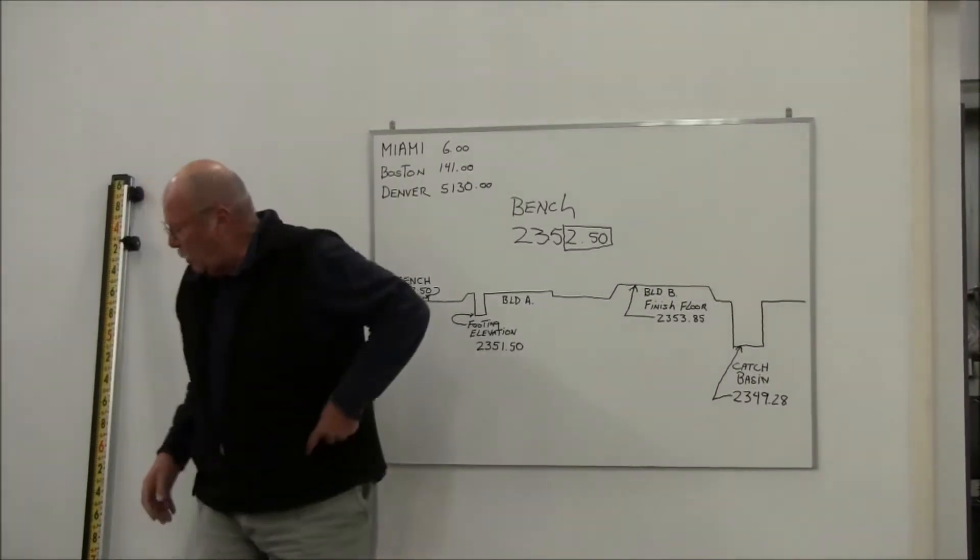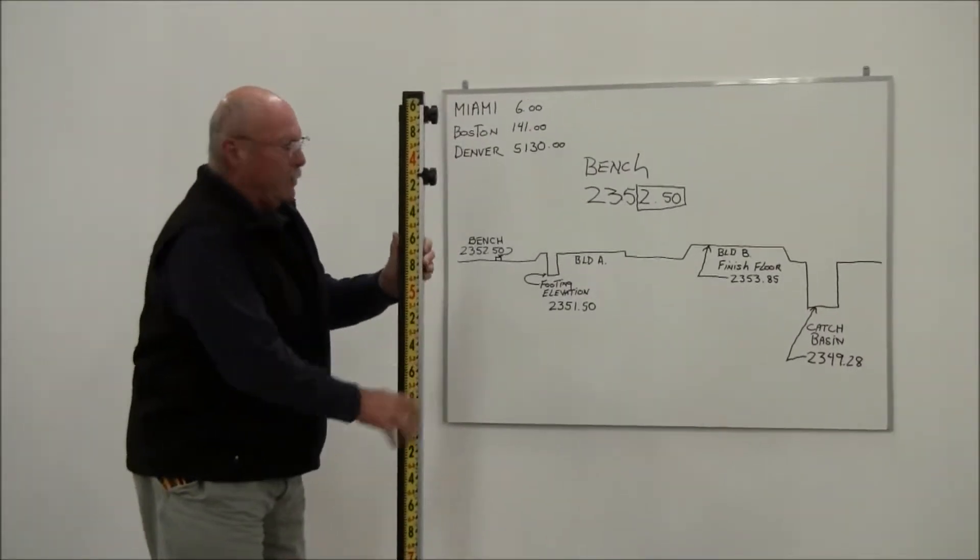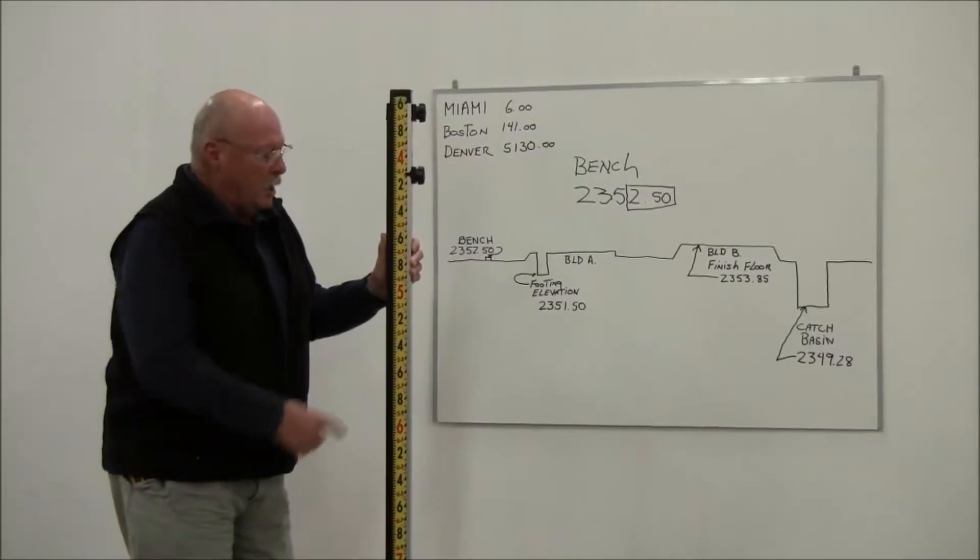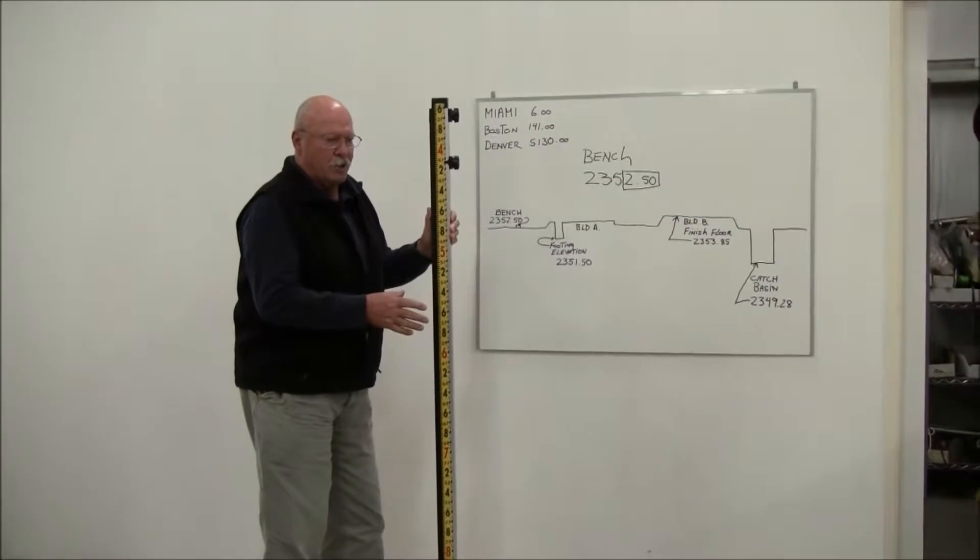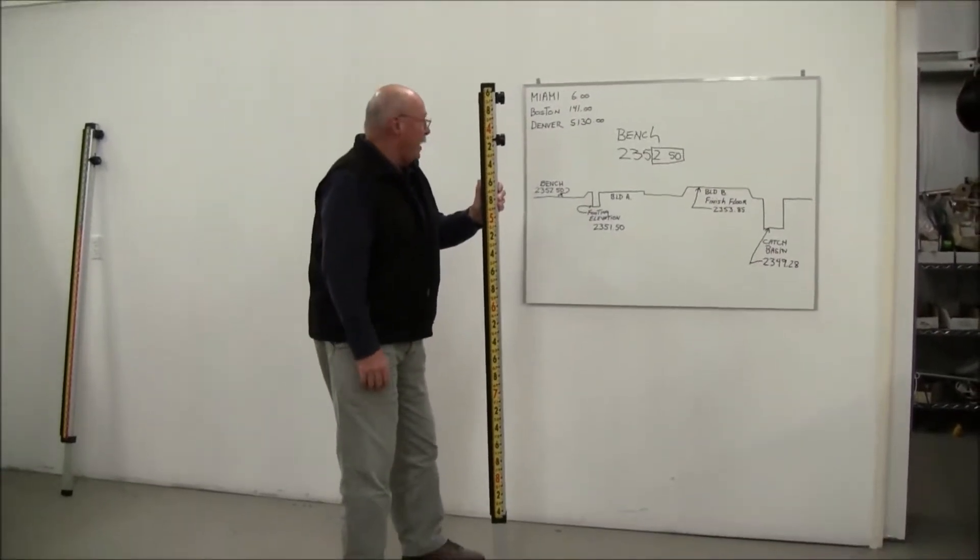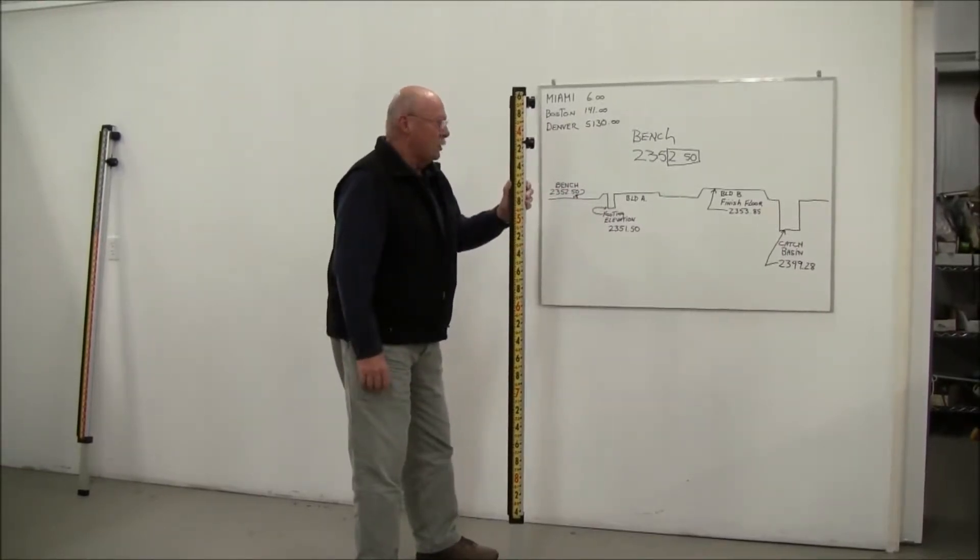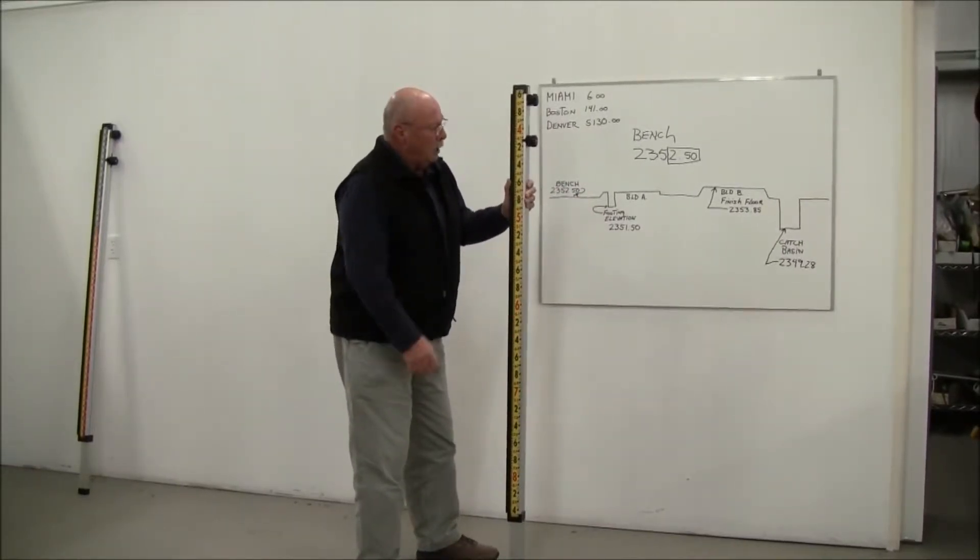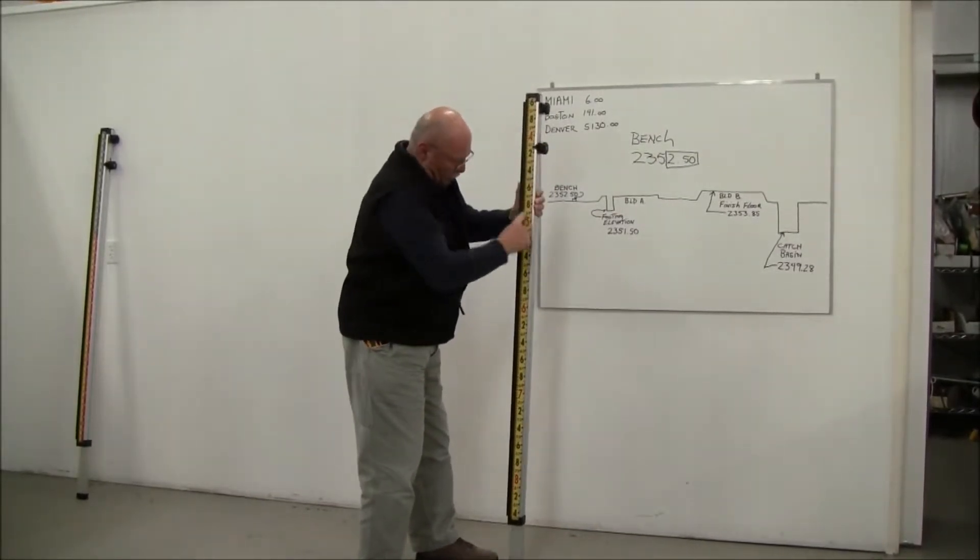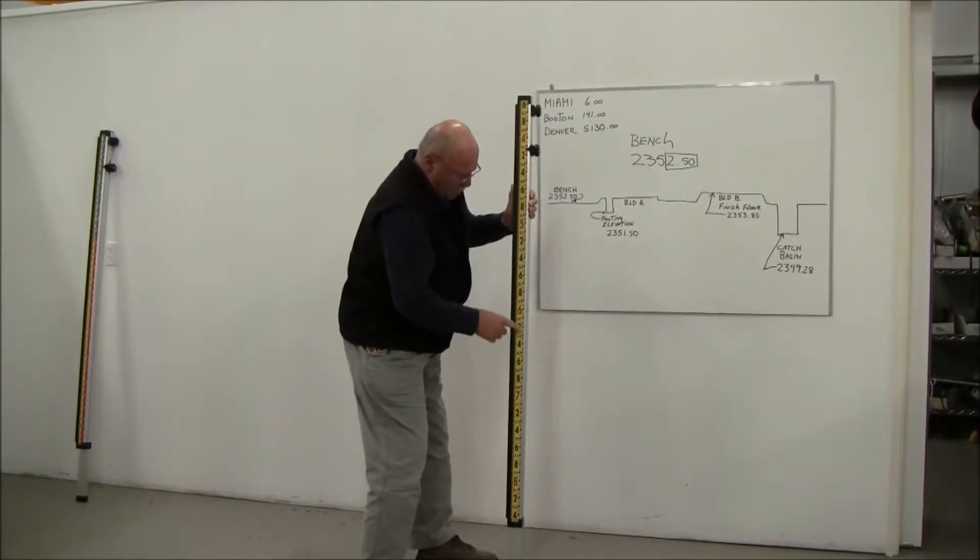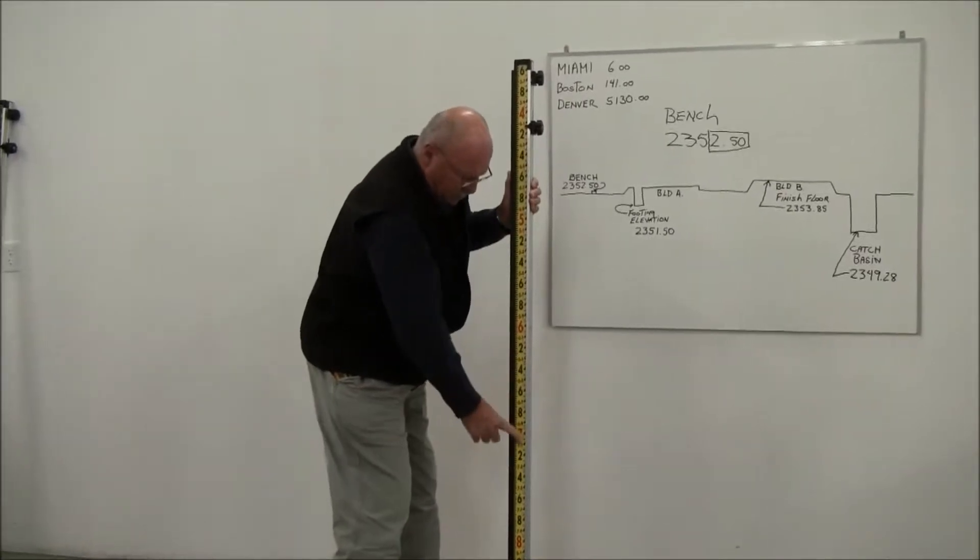So what I'll do is this is a direct reading rod right here. We happen to make 16 different models. This is a 10-foot rod in feet, tenths, and hundredths. That's how most jobs are set up. And that's, by the way, this true elevation is elevation above mean sea level. So the first thing you'll notice about this grade rod is that the numbers are not going the same way as a normal grade rod. You have four feet, five feet, six feet, seven feet.